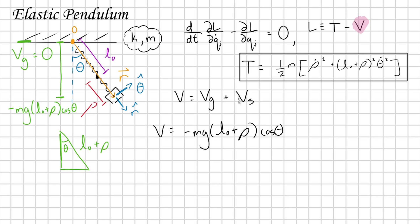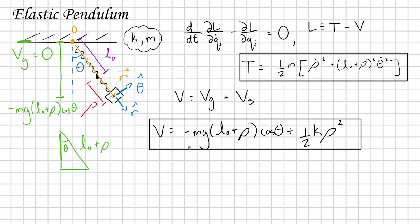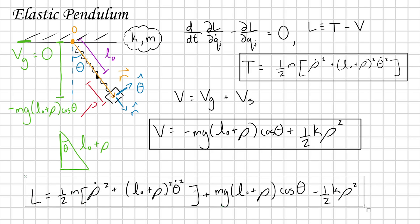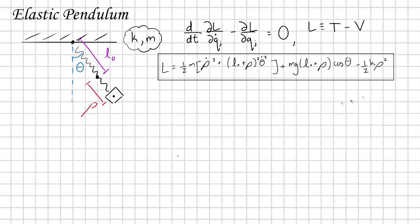We also have potential energy stored in the stretched spring. We all know that formula: one half k times the stretch from equilibrium rho squared. Now we have the two terms T and V needed to define the Lagrangian for our system — we just take their difference. And there we have this nice Lagrangian function, which is all that we need to describe the dynamics of this system.